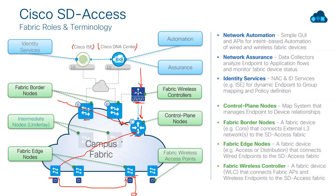Intermediate nodes should not necessarily be part of the fabric. These are devices like core switches or distribution switches that allow ISIS or OSPF and provide connectivity between fabric devices. You don't have to give them any role or join them to the fabric — they sit in the background as part of the underlay. But without them, the fabric won't work because the underlay won't function without them, and there will be no connectivity between fabric devices.